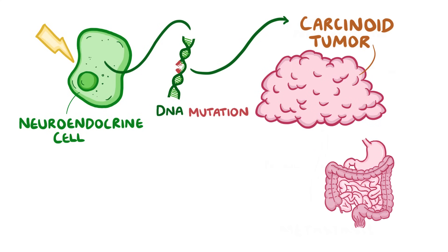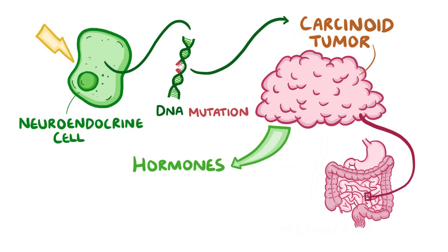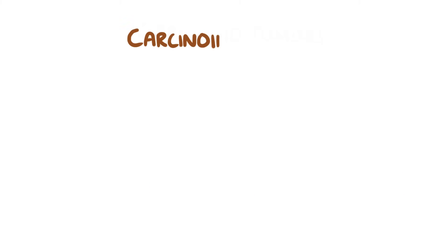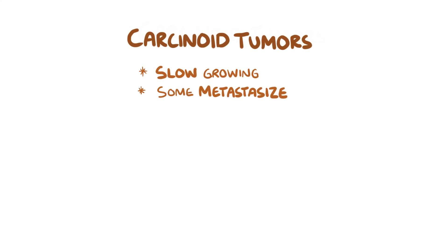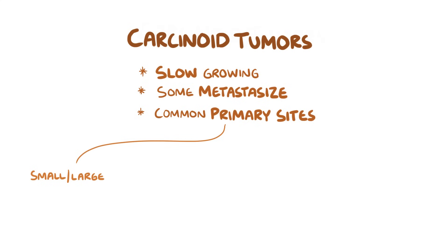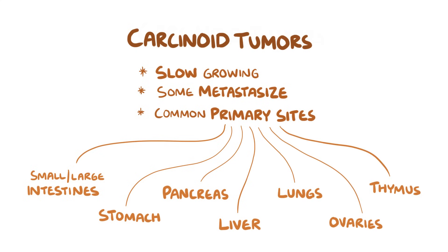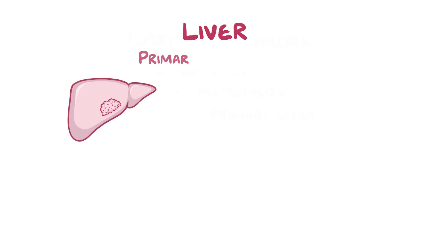Most of the time, these carcinoid tumours develop in the gastrointestinal tract. Some of the abnormal functions of these cancerous neuroendocrine cells include producing and secreting large amounts of hormones, and they also express more somatostatin receptors on their surface, particularly in the gastrointestinal tract, though it's not really known why. Carcinoid tumours tend to be slow-growing, although some can metastasise, often depending on the location. The most common primary sites are along the small or large intestines, as well as the stomach, pancreas, liver, lungs, ovaries in females, and the thymus. The most common site for a neuroendocrine tumour to metastasise to is the liver, so the liver can really be a primary or a secondary site of the disease.